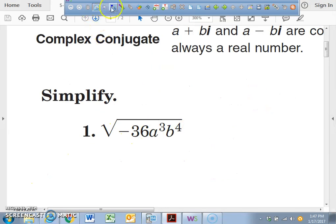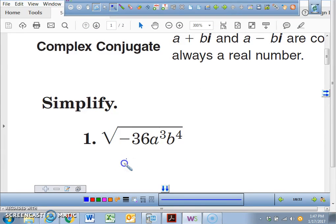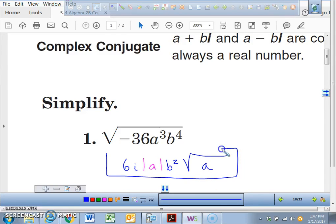Alright, so I'm going to transfer our answer. Our final answer for this was 6⋅i⋅|a|⋅b² and inside of the radical what did we have left over? We just had one a left over. That was one of those more difficult problems, basically because of applying the absolute value.